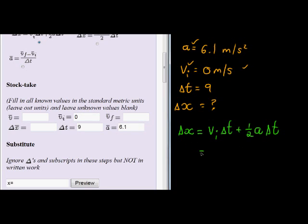Now with that in mind, we have initial velocity is 0, delta T is 9, plus a half of 6.1 times 9.